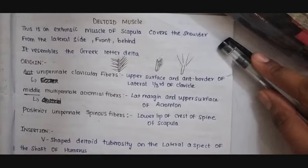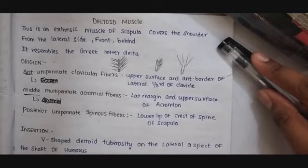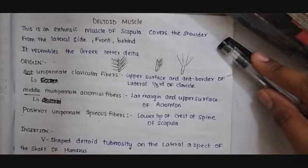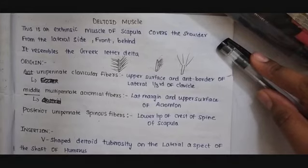Next will be the posterior unipinnate spinous fiber. The scapula has three processes: acromion process, coracoid process, and spinous process. This spinous process has two borders: anterior border and the posterior border. The posterior border of the spinous process is called the crest of spine of scapula. This crest of spine of scapula has two lips: upper lip and lower lip. This posterior fiber arises from the lower lip of the crest of spine of scapula.